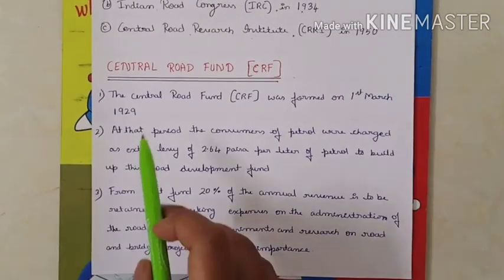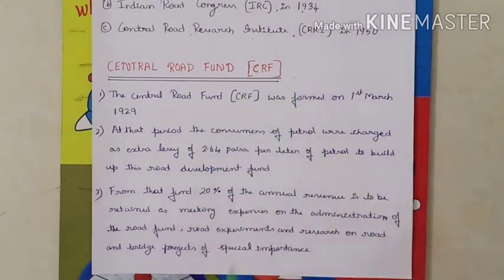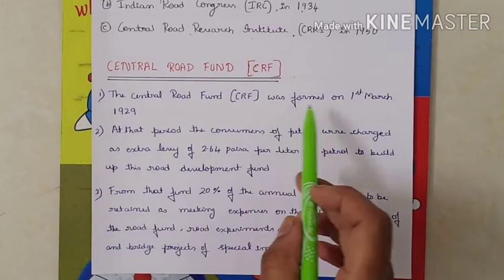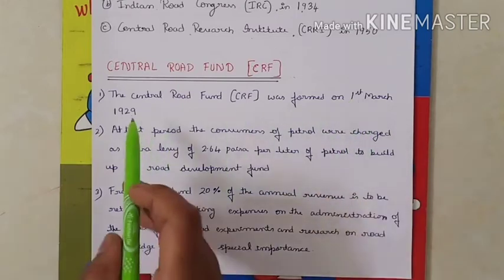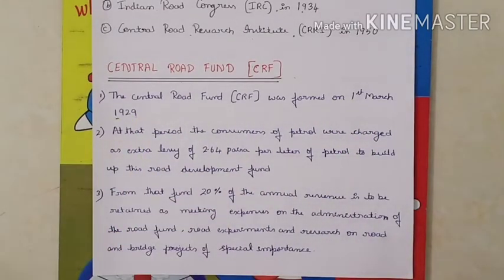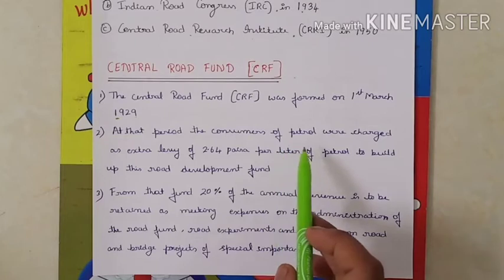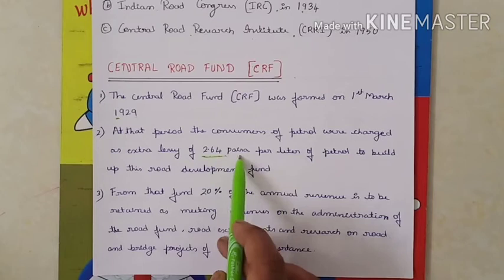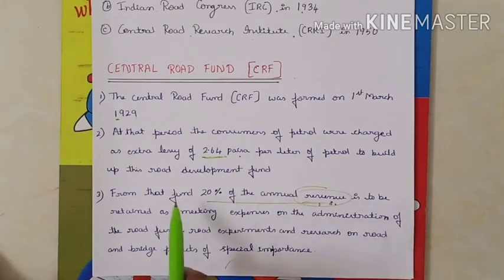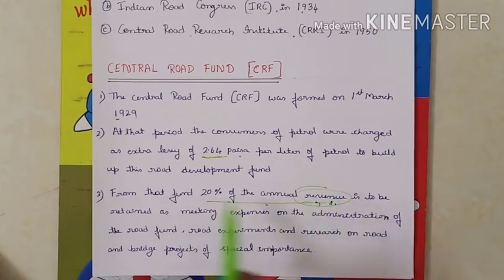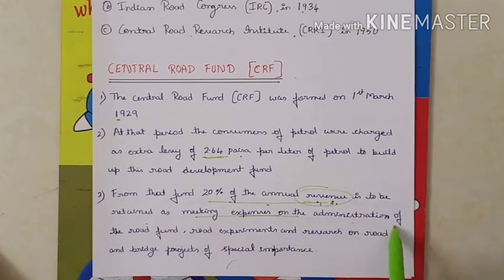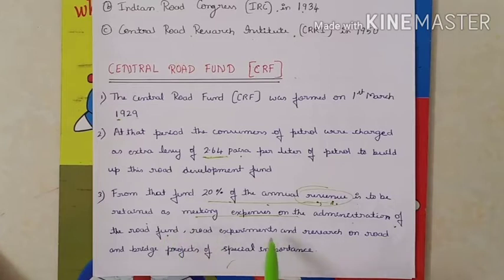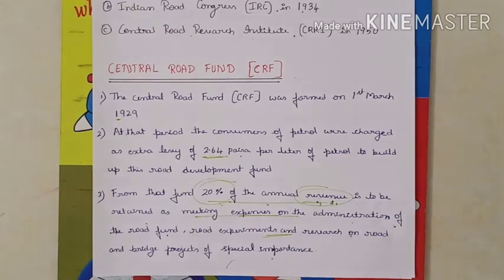The first recommendation implemented was the Central Road Fund (CRF), formed on 1st March 1929. Consumers of petrol were charged an extra levy of 2.64 paisa per litre. From the annual revenue, 20% was to be retained for meeting expenses on administration of the road fund, road experiments, and research.